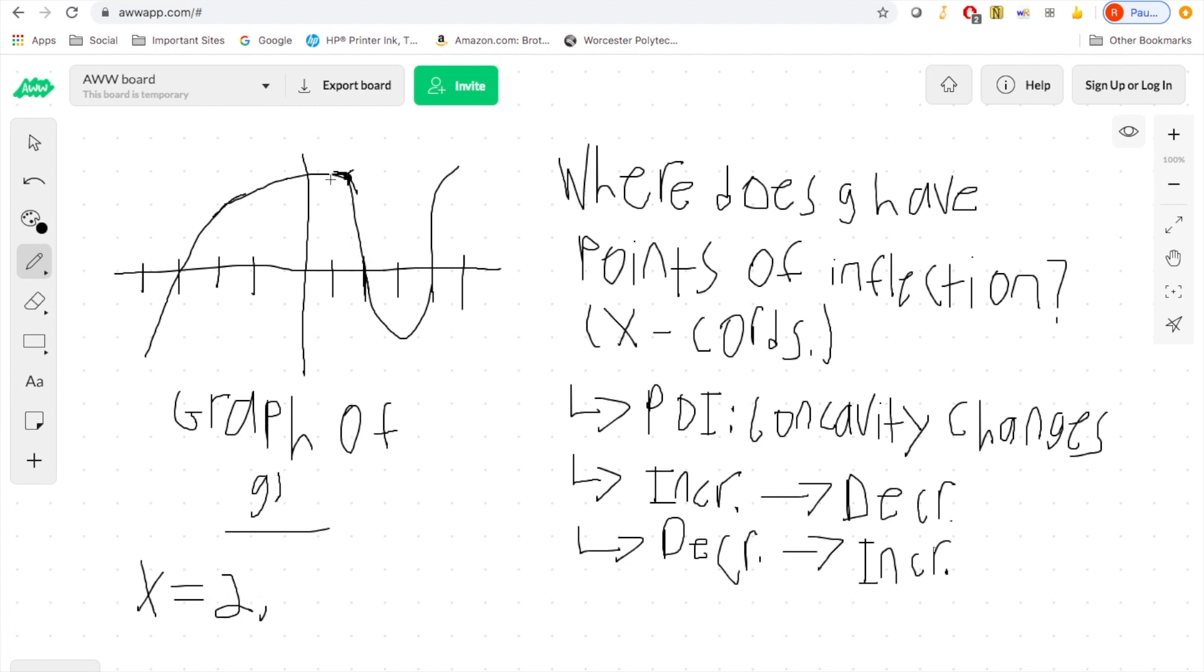It's increasing up to here or it's supposed to be and then we drop down. So x equals 2, and then we see another one of these points right here at x equals 3 because as you see it goes from decreasing to increasing here. So x equals 2 is an example of increasing to decreasing and x equals 3 is an example of decreasing to increasing.